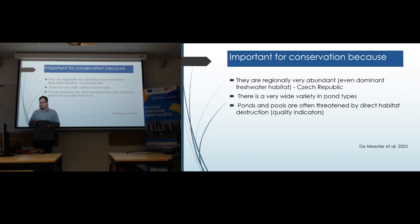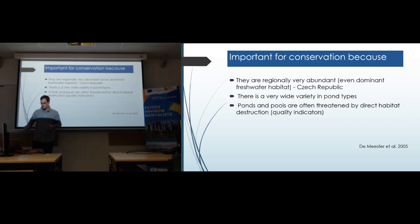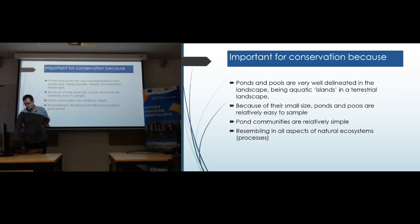Ponds are often threatened by different habitat destruction. Because they are very small compared to larger structural units, ponds can also be seen as quality indicators — if you measure specific indicators in ponds, you can assess the state of the landscape. Ponds can therefore be seen as indicators of environmental quality.